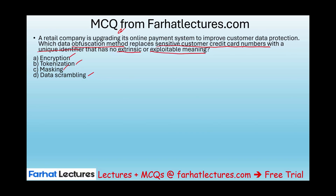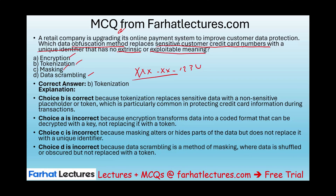What about masking? Masking is when you have a social security number and mask the digits. Data scrambling is a form of masking where you shuffle the numbers — obscuring but not replacing with a token. Tokenization is what fits this definition: replacing sensitive customer credit card information with a unique identifier that has no exploitable meaning. So the answer is B — tokenization.